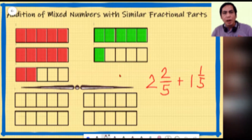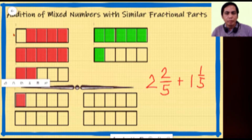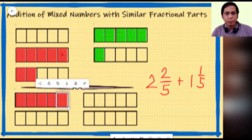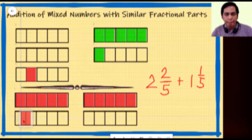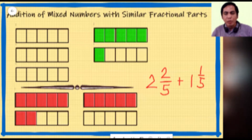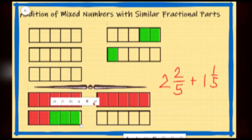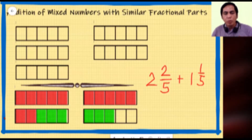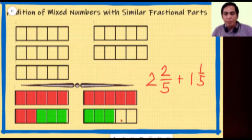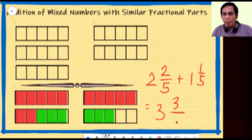We'll combine the tiles — first completing the red tiles, then continuing with the green tiles. All in all, we have covered three wholes and three fifths. So when we add two and two fifths plus one and one fifth, it gives us three and three fifths.